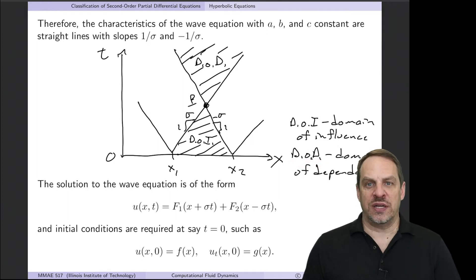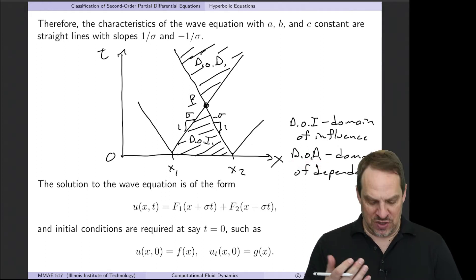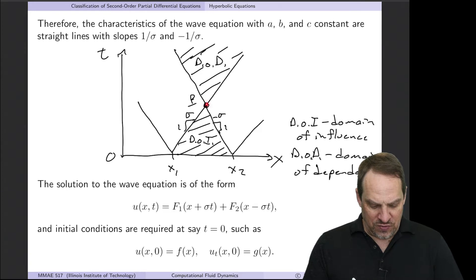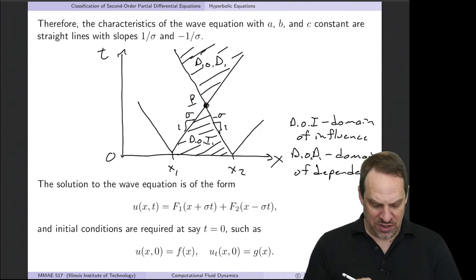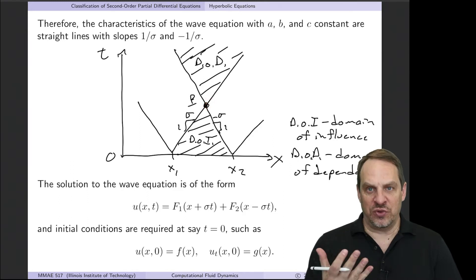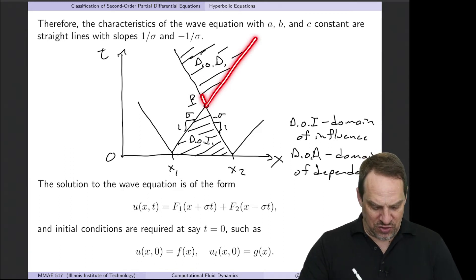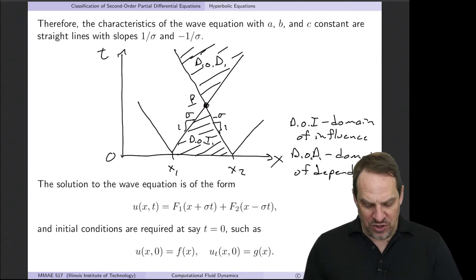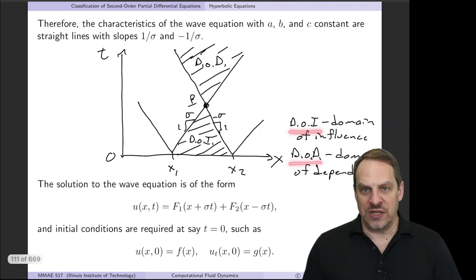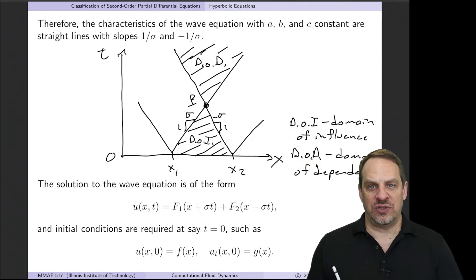The domain of dependence (DOD) is the set of points for which P influences their solution—what happens at P can affect those points. That's this cone between the two forward-propagating waves. What happens outside that cone is unaffected because the wave has not yet reached those points. We'll track DOIs and DODs for all three equation types and see very different characteristics.